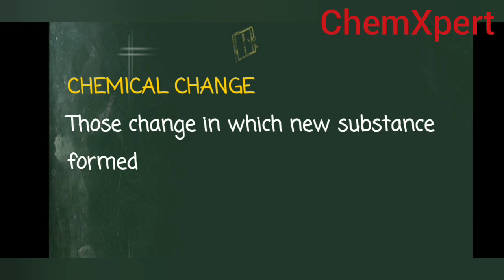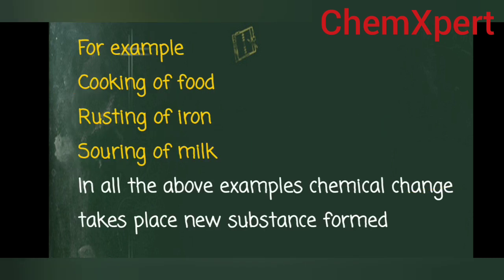Examples of chemical change include cooking of food — raw food becomes cooked food — this whole process is a chemical reaction. Another example is rusting of iron: an iron nail in solid form, when it comes in contact with oxygen, carbon dioxide, air, and water moisture, converts into fine powder or flake-like layers covering the iron.